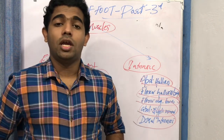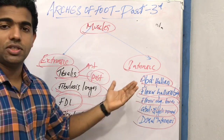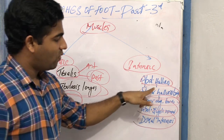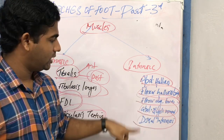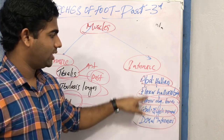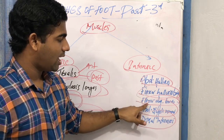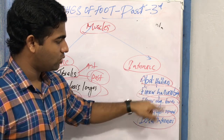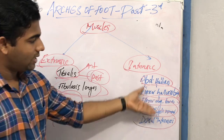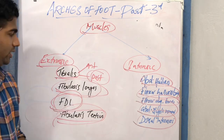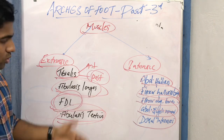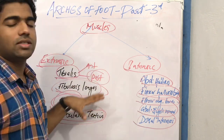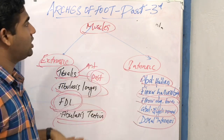The intrinsic muscles contributing to arch support include abductor hallucis, flexor hallucis brevis, flexor digitorum brevis, abductor digiti minimi, and dorsal interossei. As a memory aid: there are two flexors (flexor hallucis brevis and flexor digitorum brevis) and two abductors (abductor hallucis and abductor digiti minimi). All these muscles have a definite role in the support of the arch.